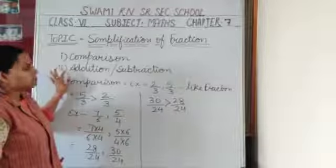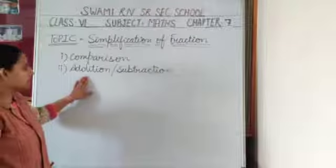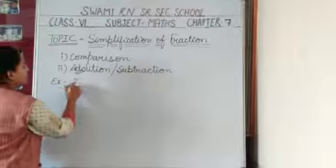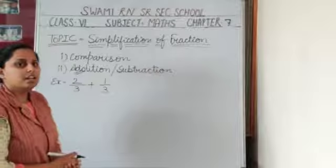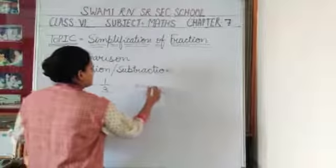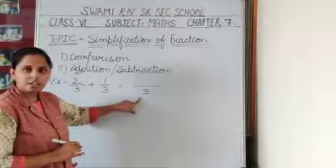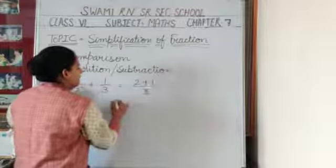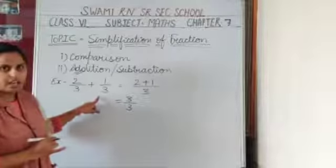Now students, we are moving to how to perform addition between two fractions. I am taking an example for addition: 2 upon 3 plus 1 upon 3. When the denominators are the same, the denominator of the question is the same as the denominator of the answer. So directly add the numerators: 2 plus 1 = 3 upon 3. This is the addition when we have like fractions.